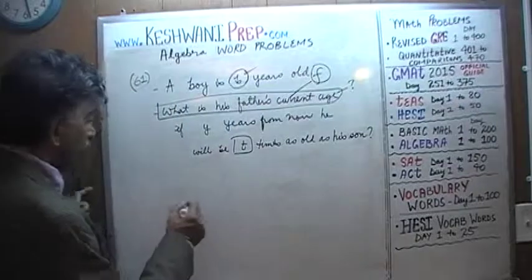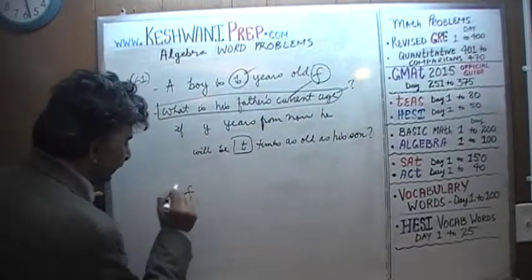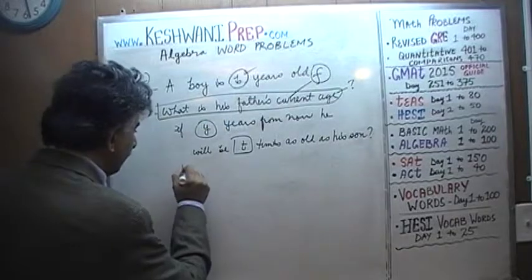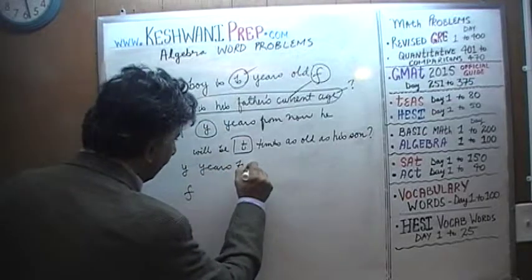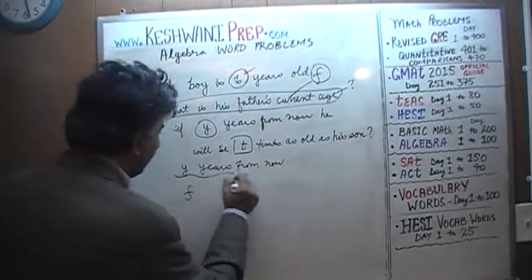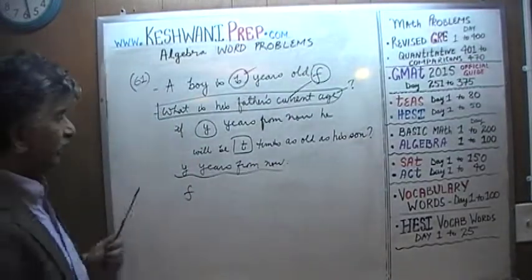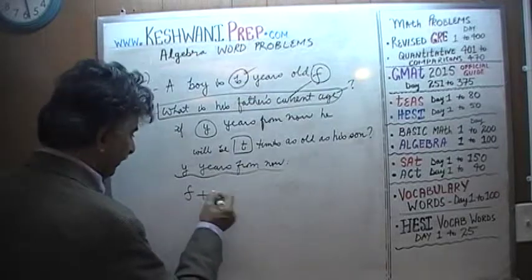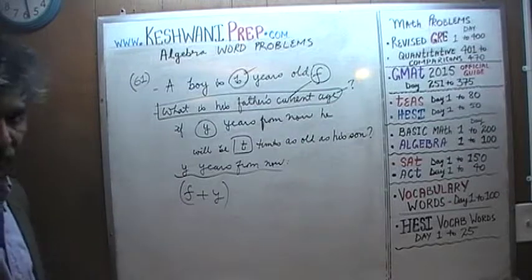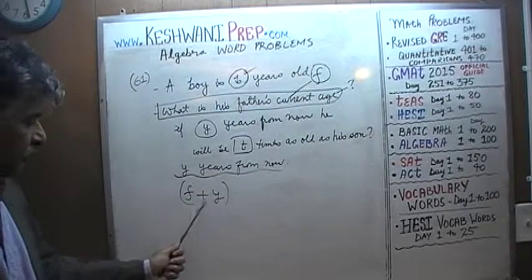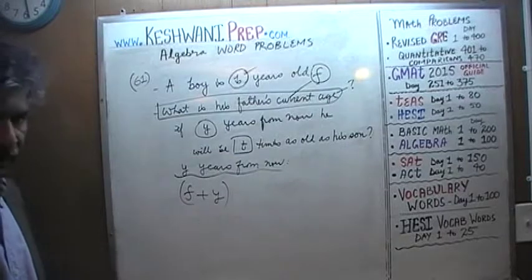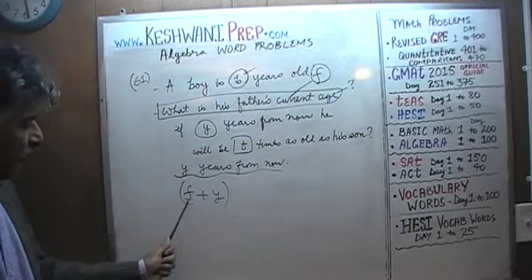So let's get going. If father is F years old today, then y years from now he is going to be F plus Y. For example, if father is F years old today, then three years from now is F plus three, seven years from now is F plus seven, ten years from now is F plus ten. Therefore, y years from now is going to be F plus Y.